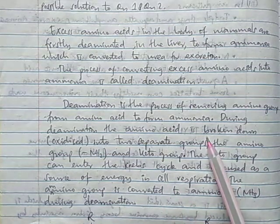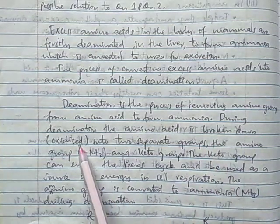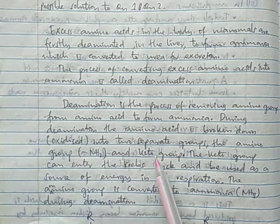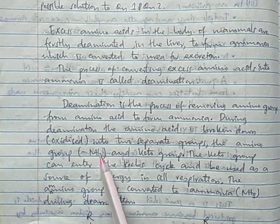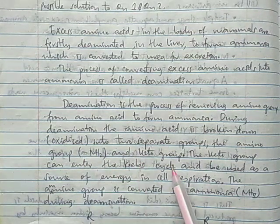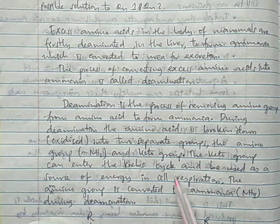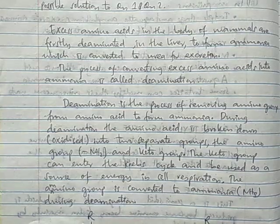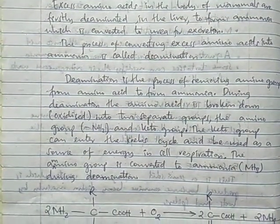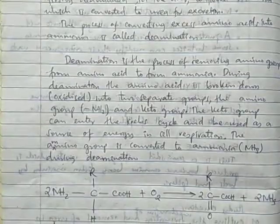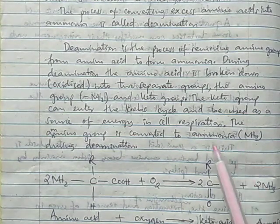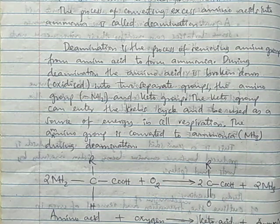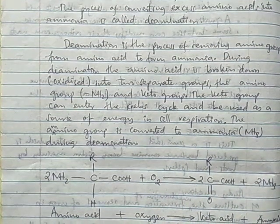During deamination, the amino acid is broken down or oxidized because the reaction involves addition of oxygen into two separate groups: the amino group which is NH2 and the keto group. The keto group can enter the Krebs cycle and can be used as a source of energy in cell respiration. But the amino group is converted to ammonia NH3 during deamination.